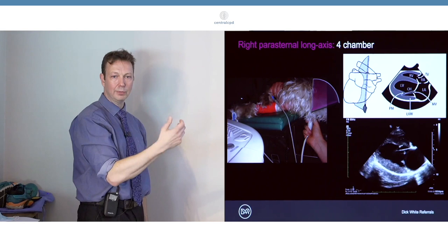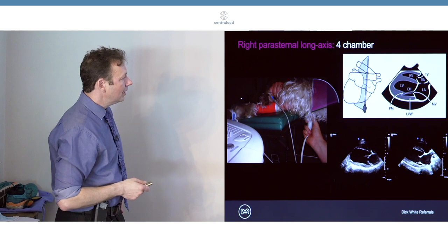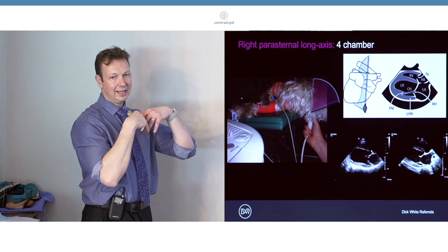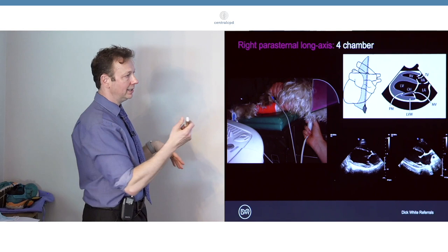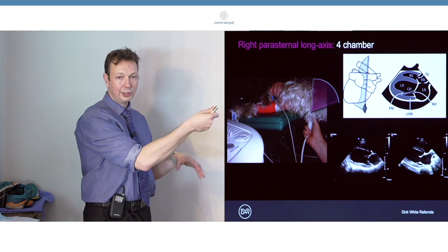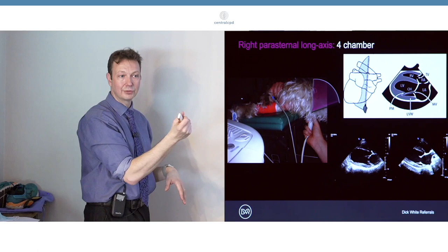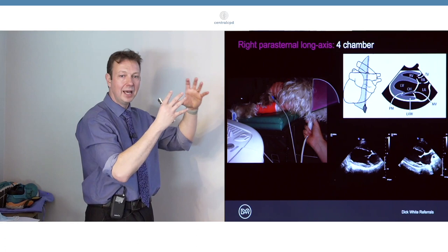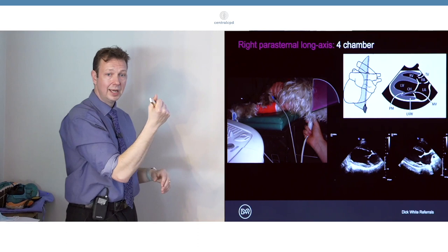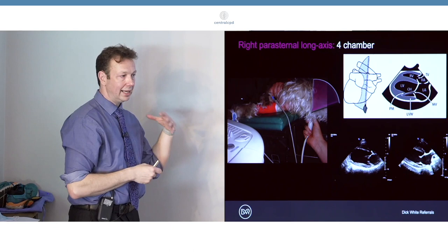You may find particularly with bigger dogs that in order to see the atria and the ventricles you can't do it all on one sector. What you might need to do is to angle upwards or dorsally a little bit to bring in the atria to optimize the image for the atria, and then conversely bring it back down again to optimize the ventricles. That's very common - you're not doing anything wrong if there's a big heart. It may be beyond the space of your sector and you might need to concentrate on the atria.